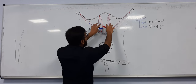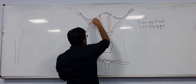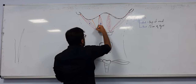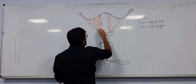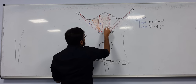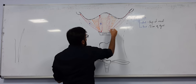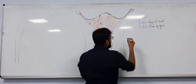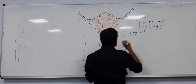Now the next muscle — if I remove the digastric muscle, behind it I have one more muscle. Behind the digastric muscle I have another muscle, drawn here in orange. The name of this second muscle is the mylohyoid muscle.